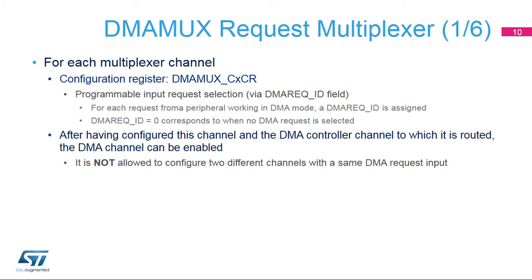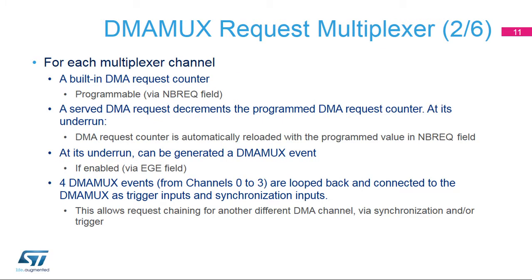For each multiplexer channel, there is a configuration register DMA-MUX CX-CR with programmable input request selection via the DMA REQ-ID field. For each request from a peripheral working in DMA mode, a DMA REQ-ID is assigned. DMA REQ-ID equals 0x00 corresponds to no DMA request selected. It is not allowed to configure two different channels with the same DMA request input. A built-in DMA request counter is programmable via the NBREQ field. A served DMA request decrements the counter, and at its underrun, the counter is automatically reloaded. At underrun, a DMA-MUX event can be generated if enabled via the EGE field. Four DMA-MUX events from channels 0 to 3 are looped back as trigger inputs and synchronization inputs, allowing request chaining for another DMA channel.